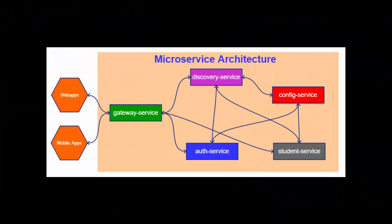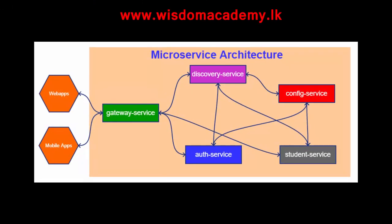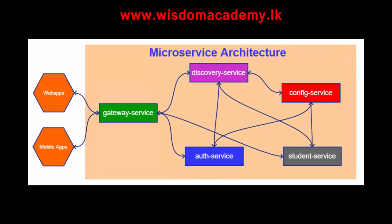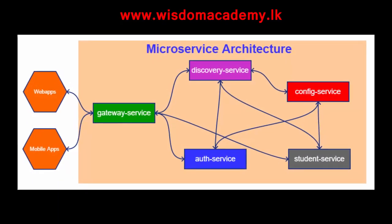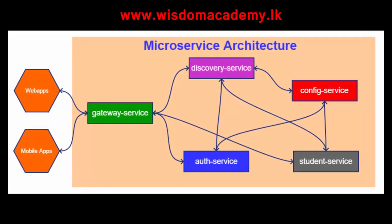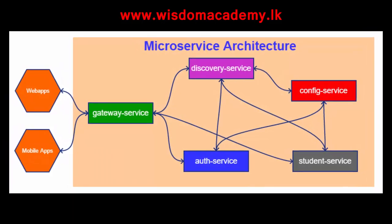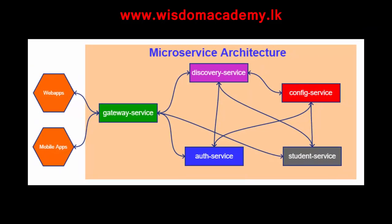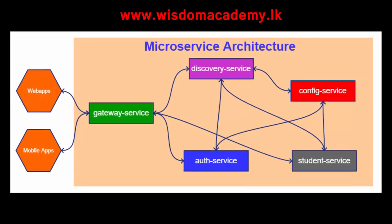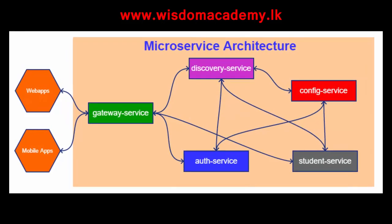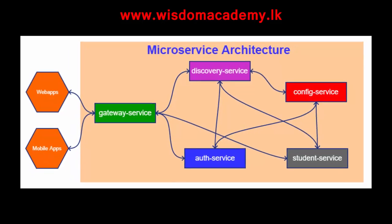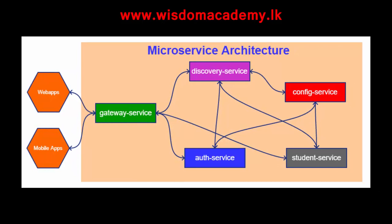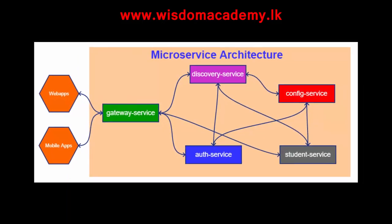According to our microservice architecture diagram we should have 5 services: 1. Discovery Service, also known as Eureka Server. 2. Config Service, also known as Config Server. 3. Gateway Service, also known as API Gateway. 4. Auth Service, also known as Authentication and Authorization Server. 5. Student Service, which is the service we are going to use as resource server.